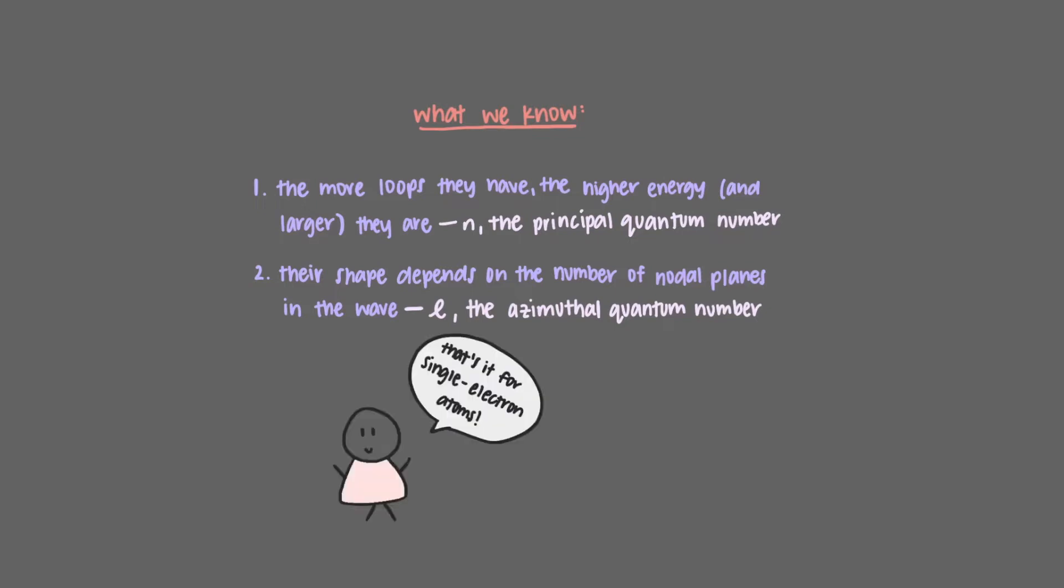To understand the properties of single electron species, we can pretty much stop here, but that would be no fun. After all, the interesting elements all have more than one electron. So what other properties do we need to know?